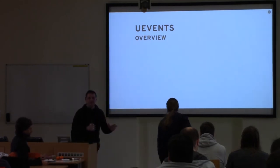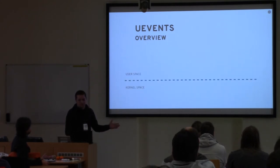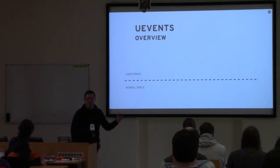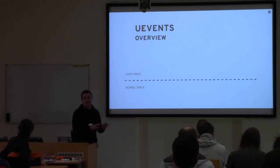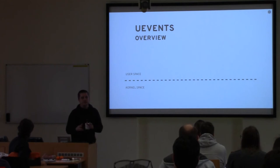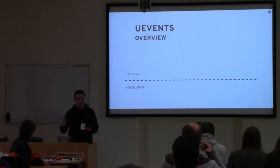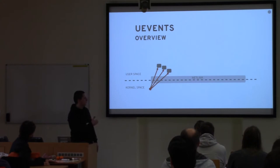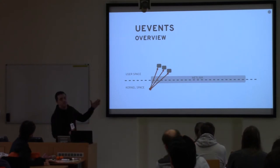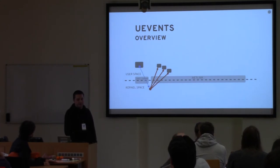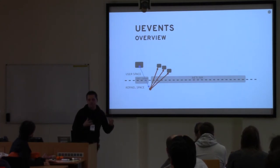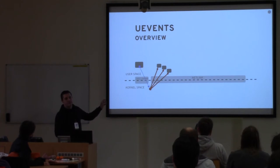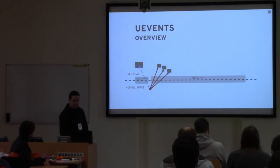So it's about uevents and udev. Just to recap — what are uevents? We have kernel space and user space, and we need to have user space know about some changes that are happening in the kernel to a device. It's either device addition, removal, change, renaming a device, and things like that. So we have a netlink socket for that, where we send uevents. These are so-called kernel uevents. They are multicast, so we have several receivers in user space. The uevent can be provoked by the kernel itself or by user space as well, via the uevents file in the sysfs filesystem.